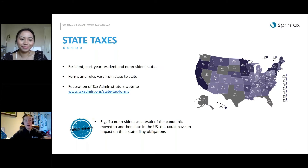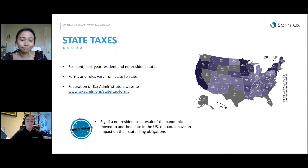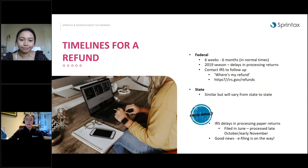Figuring out whether you've triggered a state tax filing obligation — especially if you've lived and worked in multiple states — can be tricky. Don't panic: Sprint Tax can figure that out for you, prepare your relevant state tax return forms. As a COVID impact note, if you've moved state as a result of the pandemic and earned income in multiple states, this can result in multiple state tax filing obligations.